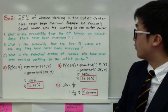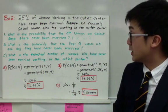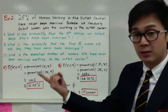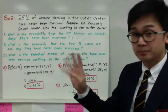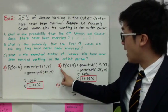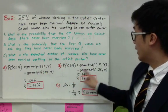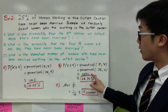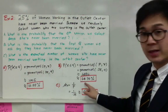For sub-question B, what is the probability that the first four women we ask all say they have never been married? This means the first, second, third, and fourth women all say they've never been married. We use GEOMETCDF to find P(X ≤ 4). Using the calculator gives 0.6836. Therefore, the probability that the first four women selected all say they've never been married is 68.36%.